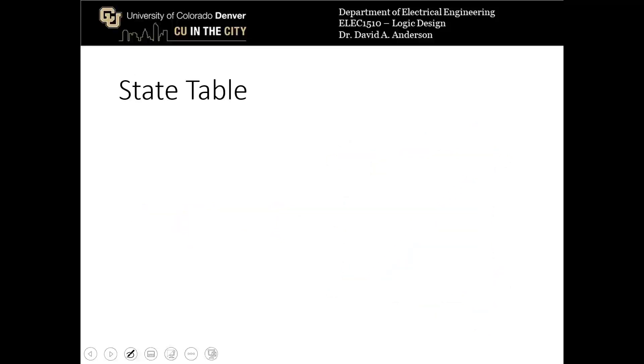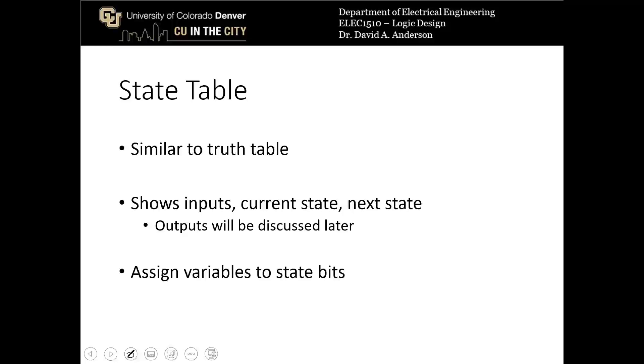So let's look at how to construct a state table for all of these state diagrams. A state table is similar to a truth table. We show the inputs, the current state, and the next state as a function of the inputs in the current state. The outputs will be discussed later because there are a few different ways to construct the outputs. We also assign variables to the state bits which aren't shown in the state diagrams, but are necessary for construction of the circuitry.